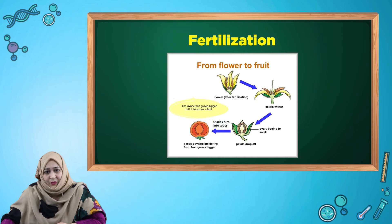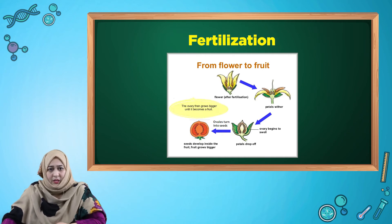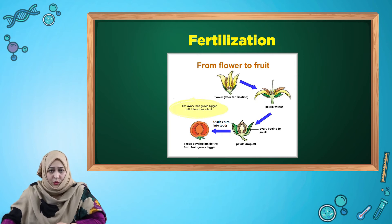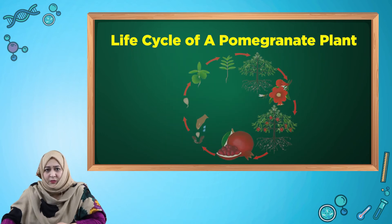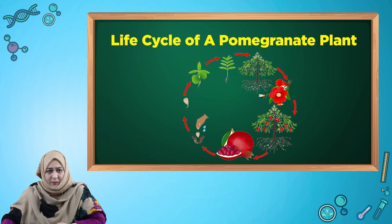After fertilization, what happens to the flower? The petals wither off, the ovary begins to swell, petals drop, ovules turn into seeds, and the ovary keeps swelling until it becomes a mature, ripened fruit.